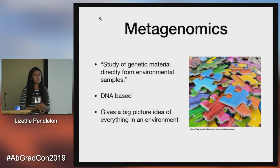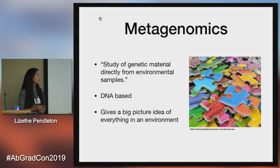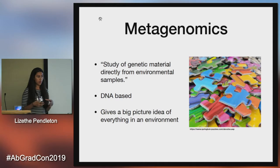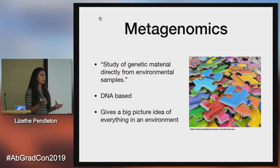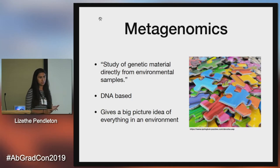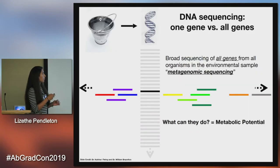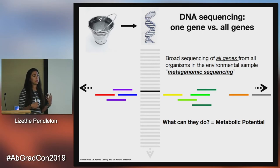Another type of sequencing very common for environmental microbiologists is called metagenomics — it's the study of genetic material directly from environmental samples. You take an environmental sample, extract the DNA, and sequence everything. This gives you a big-picture idea of everything that can possibly go on in that environment. An analogy our lab uses: it's like taking puzzle pieces from different puzzles, throwing them in a pile, throwing the boxes away so you don't know if the puzzle's complete, what it looks like, or how many puzzles there are, and then trying to piece everything together. So while 16S rRNA is deep, metagenomic sequencing is wide — it gives you the metabolic potential of everything that could be going on in an environment.